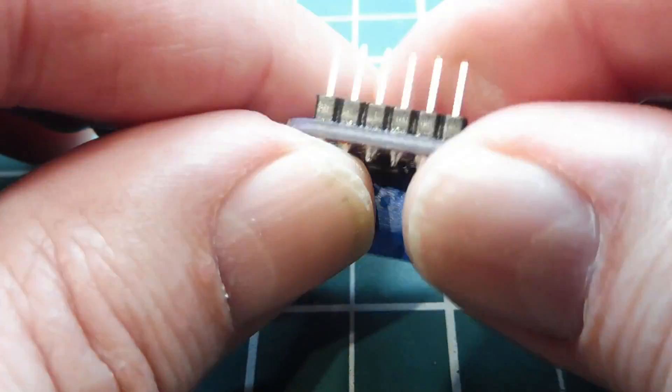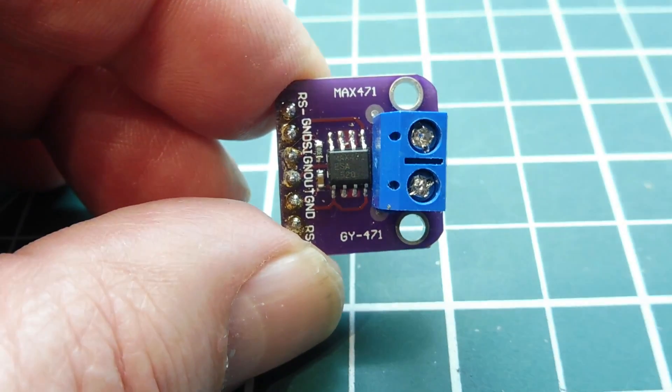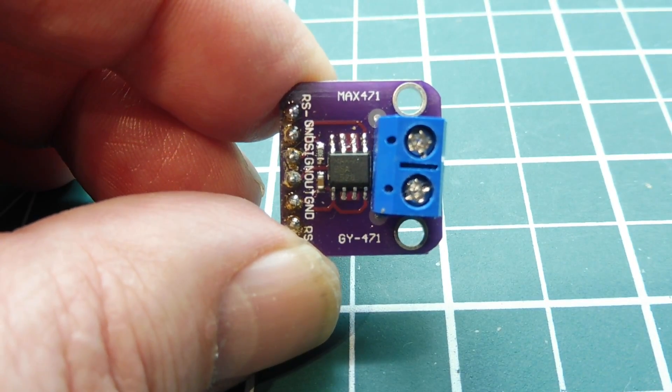So we'll mount this on the breadboard and power it up, and we'll see how we can actually measure current using the MAX471 IC.